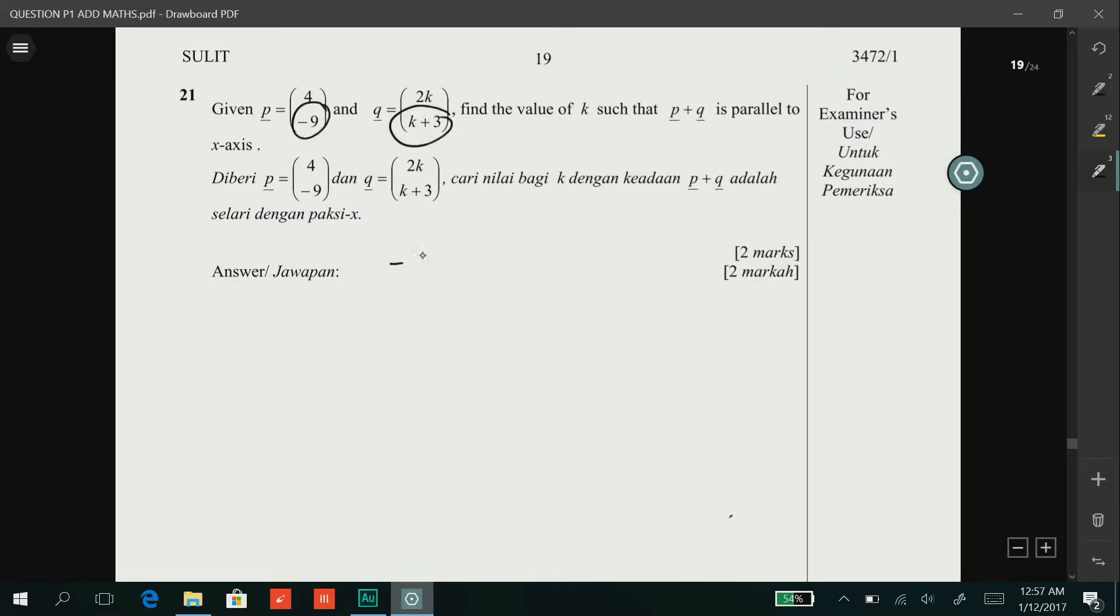negative 9 plus K plus 3 is equivalent to 0. We make K as our subject and we should get K here is equal to 6.